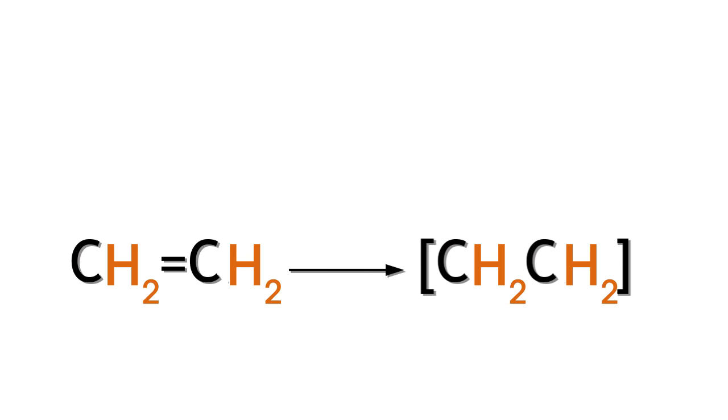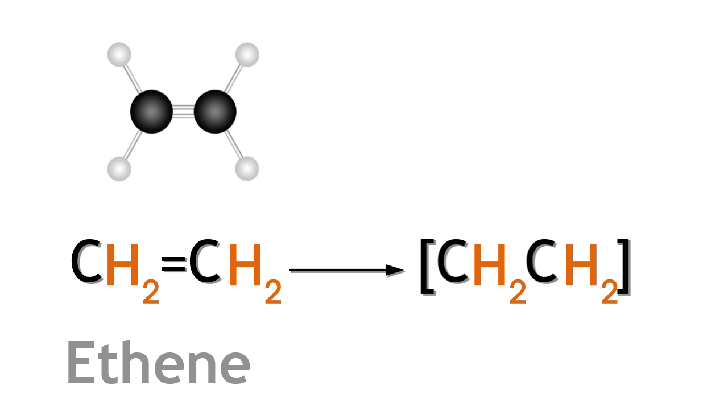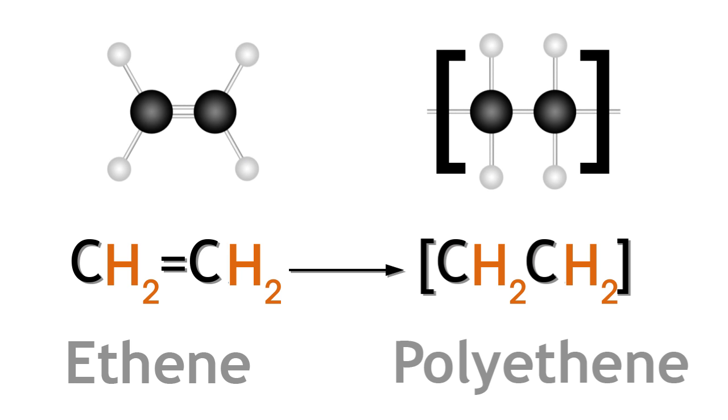To write an equation for the polymerization of ethene you should first start with the reactant ethene. And to show the polymer product we must break the double bond and extend the covalent bond outside of either side of the square bracket. This shows us that it is this unit that is repeating along the molecules long chain.